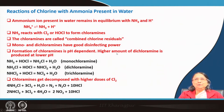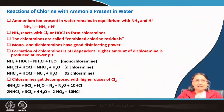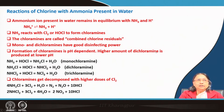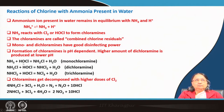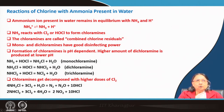Formation of chloramines is pH dependent — pH plays a major role. Higher amounts of dichloramine are produced at lower pH. NH₃ plus HOCl gives monochloramine (one chlorine atom). Further reaction gives dichloramine (two chlorine atoms), and then trichloramine. Trichloramine is a very toxic substance. These are the main chloramines formed.